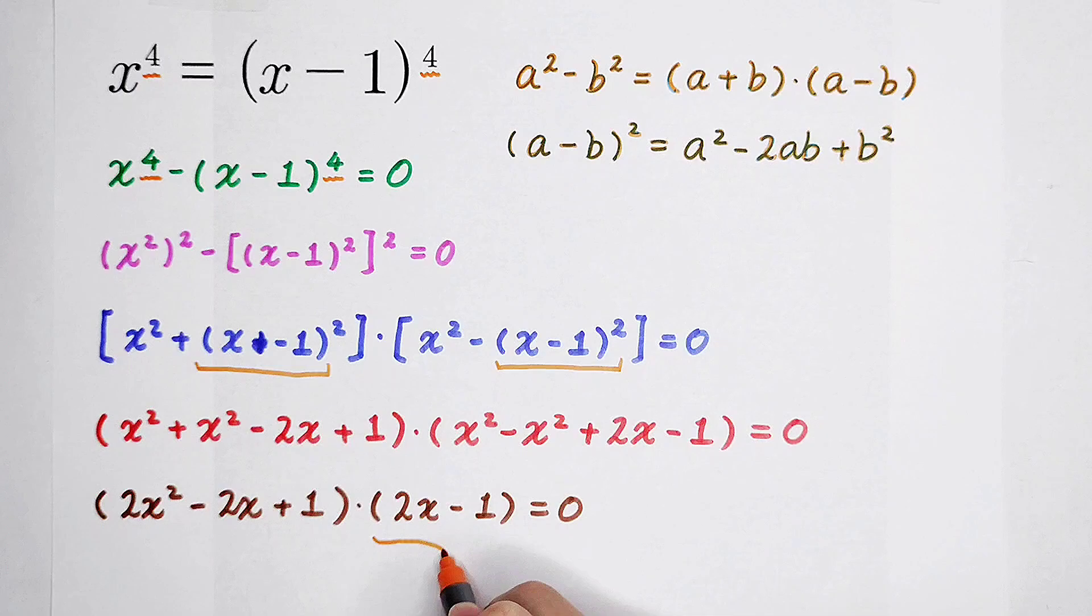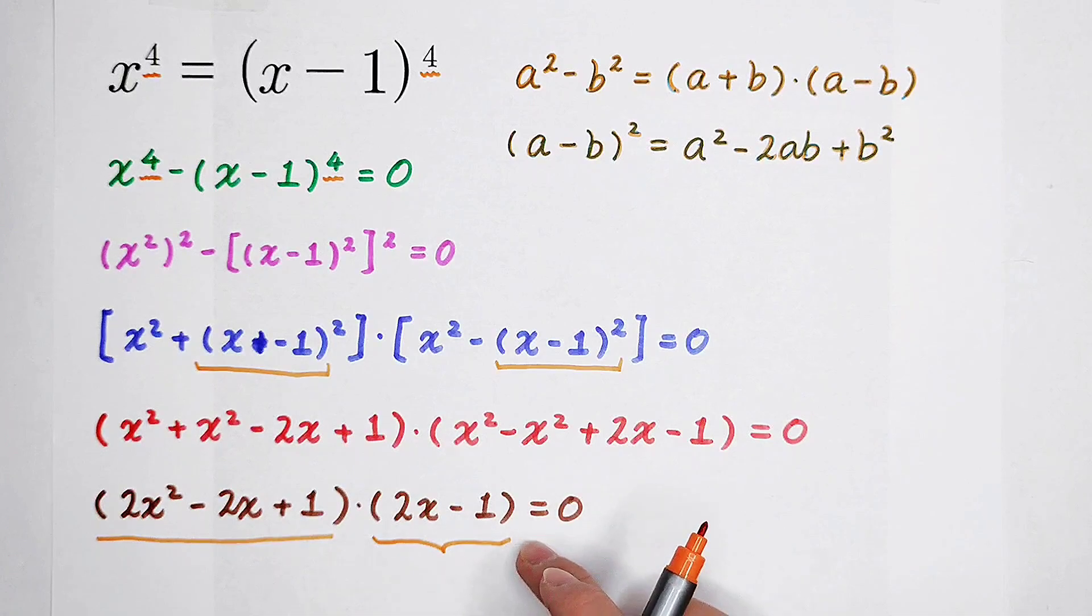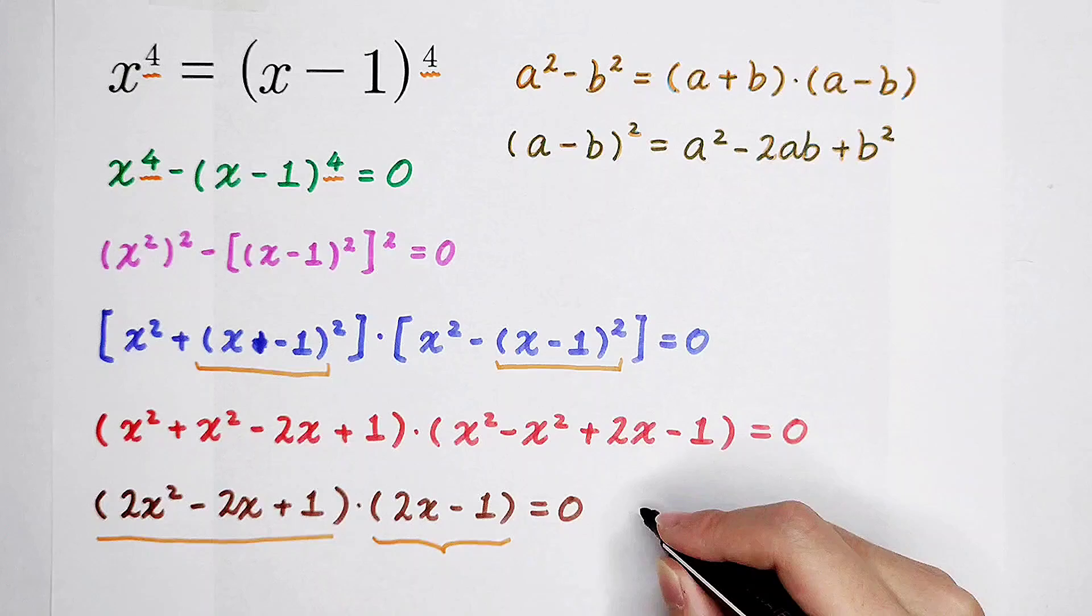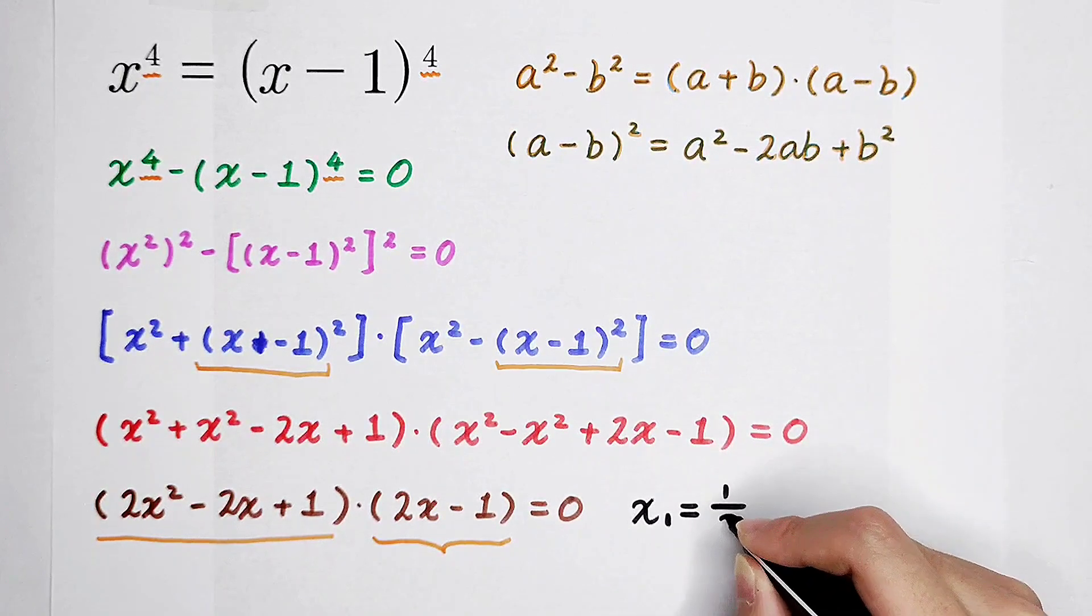So, this can be 0 or this can be 0. If this is 0, 2x is equal to 1 and x is equal to 1 half. It is 1 over 2.